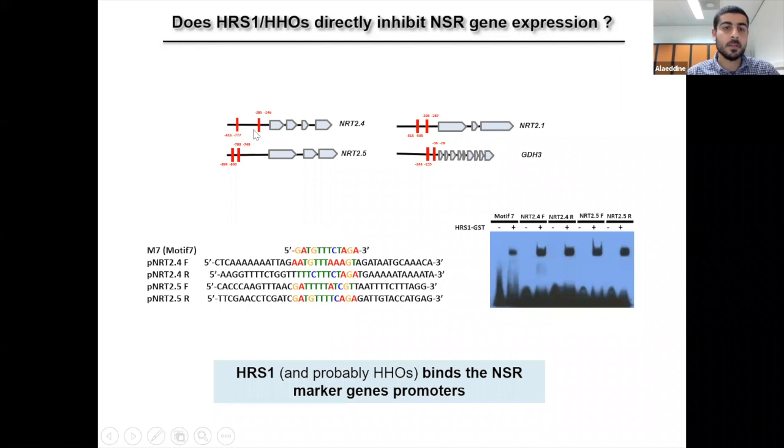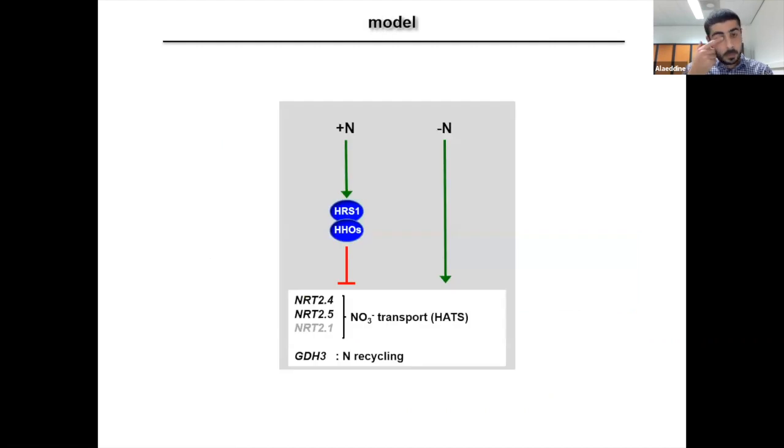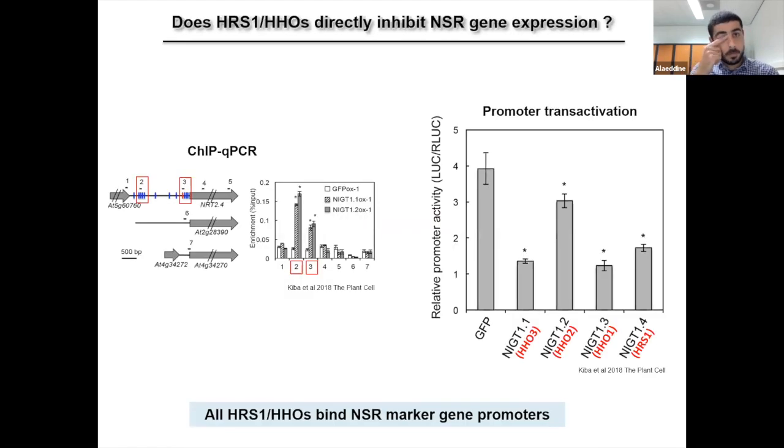And because this motif is present in two different regions of NSR marker gene promoters, we decided to test HRS1 binding to these regions. And indeed, we found that HRS1 was able to bind two different promoter regions of at least NRT2-4 and NRT2-5. So in conclusion, our TARGET, qPCR and also gel shift data together with the DAP-seq data show that HHO directly regulate nitrogen starvation response by binding and repressing the expression of the marker genes. And this is strengthened by this work done by Kiba in Japan using different but complementary approaches such as ChIP-qPCR and promoter transactivation.